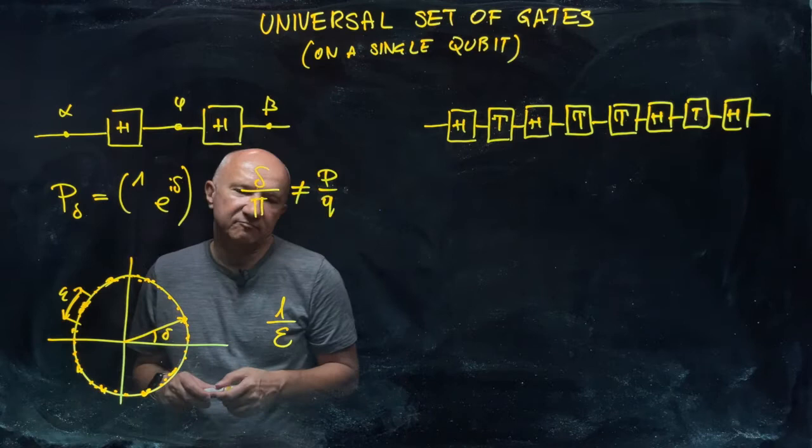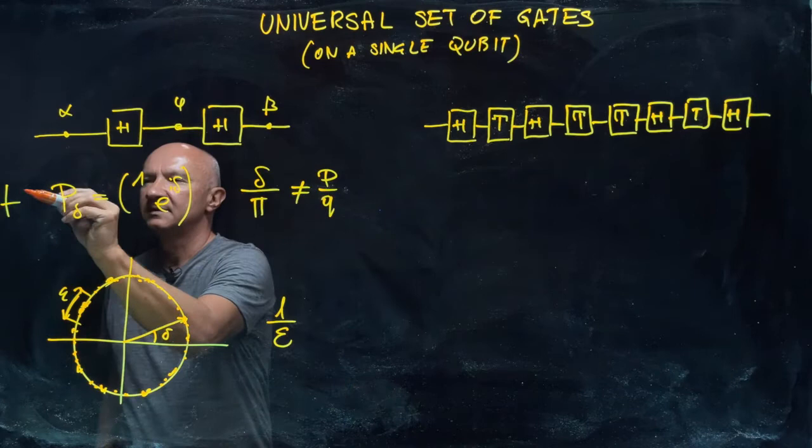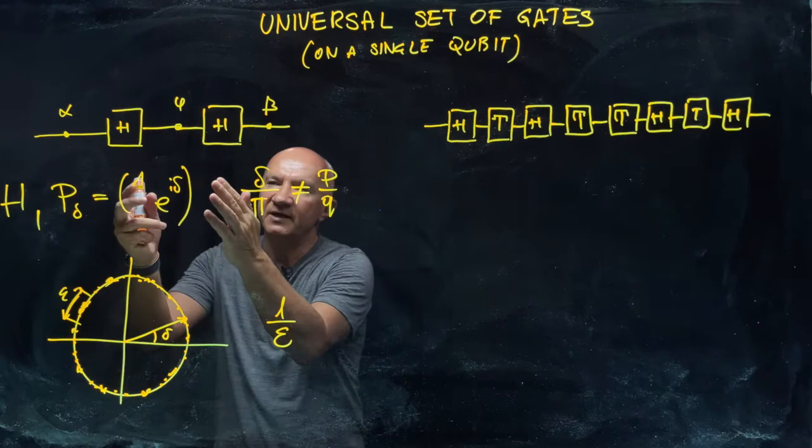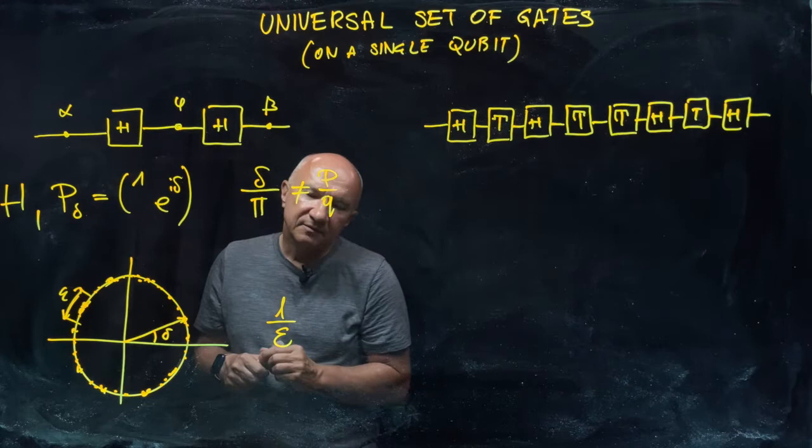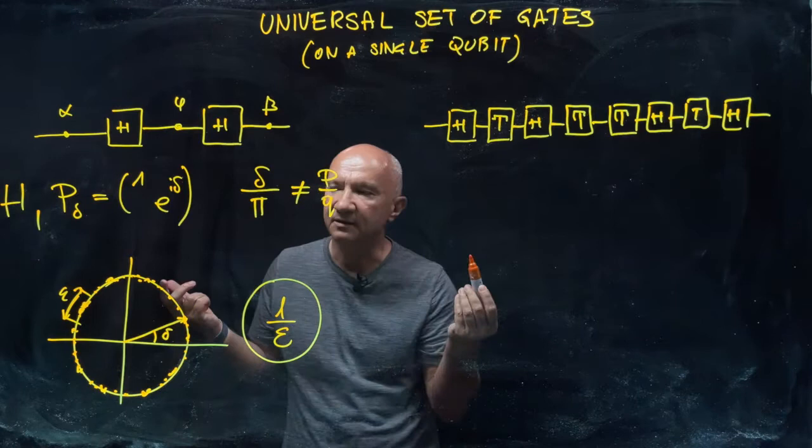We say, okay, we just pick up two gates, which is Hadamard, and another one that is a phase gate. And that phase gate should have a phase shift so that it is an irrational multiple of pi. And this scaling, like it or not, but it kind of works. But it turns out that we can do better than that.